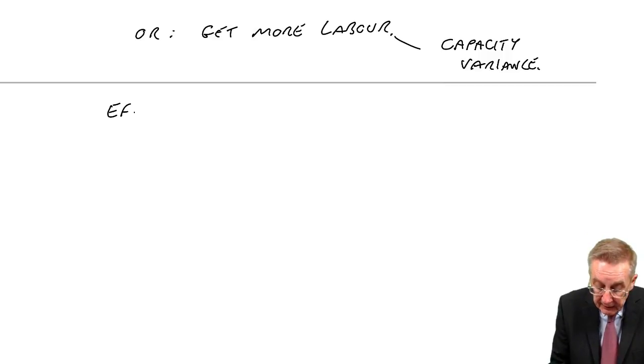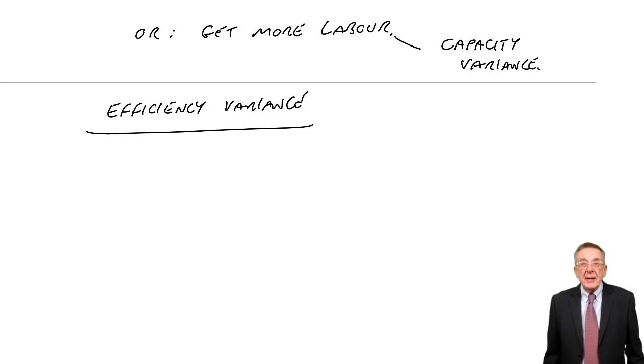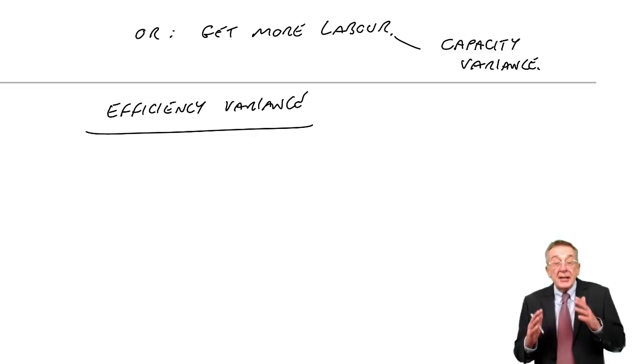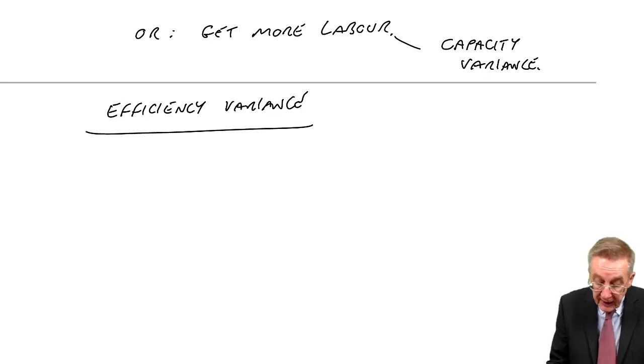And so, let's look at those and let's see how did we manage to get 200 more units and therefore save 3,000. Was it because we got more labour? Or was it because they worked faster? Or was it a combination of the two? Let's look first of all at the efficiency variance.